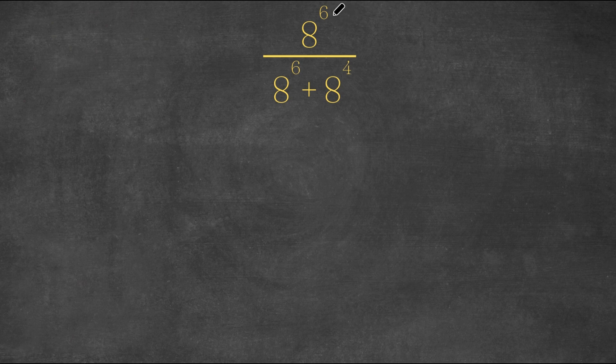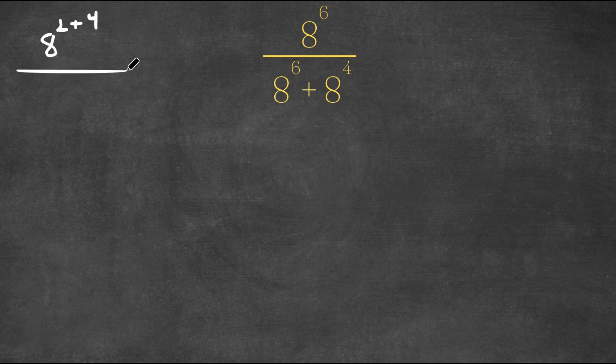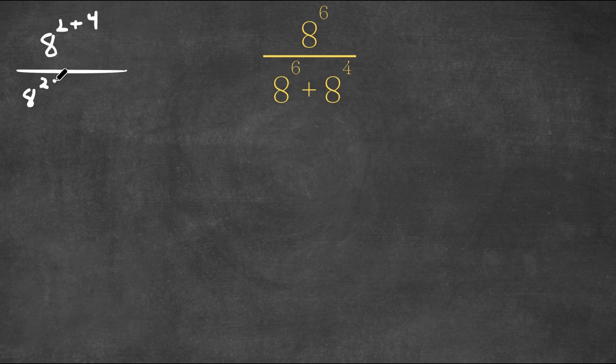Now, 6 is equal to 2 plus 4, right? So this would equal 8 to the power of 2 plus 4 over 8 to the power of 2 plus 4 plus 8 to the power of 4.